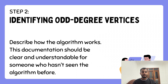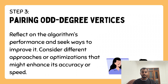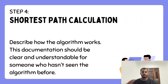Step three — pairing odd-degree vertices. If there are exactly two odd-degree vertices, we simply connect them directly. But if there are more than two, we need to pair them up. The idea is to find pairs of odd-degree vertices and create paths between them, ensuring every vertex ends with an even degree. This allows us to convert the graph into one that has an Eulerian circuit.